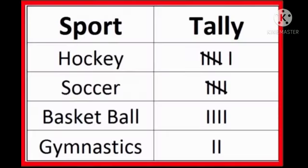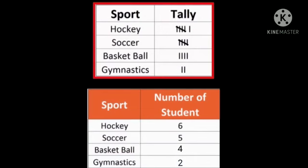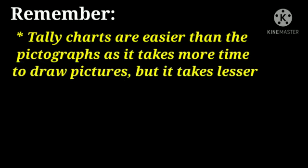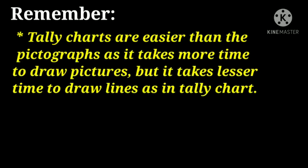The screen shows a tally chart of the favorite sports of students. From the given tally chart we observe that hockey is liked by 6 students, soccer is liked by 5 students, basketball is liked by 4 students, and gymnastics is liked by 2 students. Tally charts are easier than pictographs because it takes more time to draw pictures.